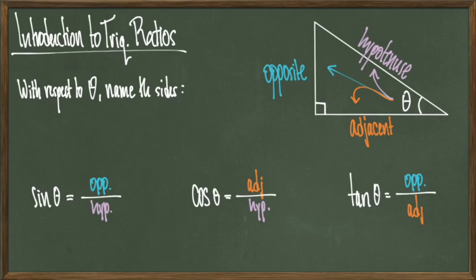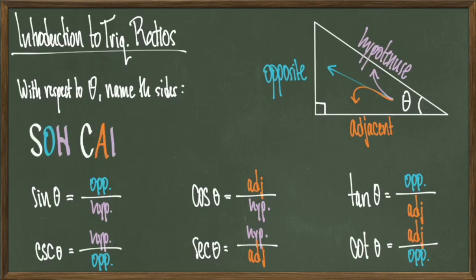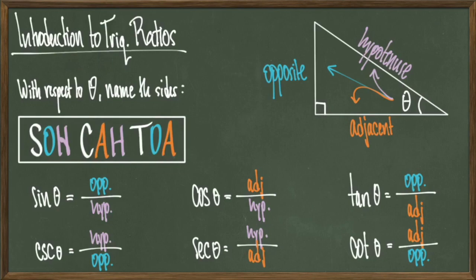Moving forward, we also have that cosecant of theta, denoted CSC, is hypotenuse over opposite. We have that secant of theta is hypotenuse over adjacent. And we have that cotangent of theta is adjacent over opposite. So the three ratios on the bottom are just reciprocals of the trig ratios that sit directly above them.